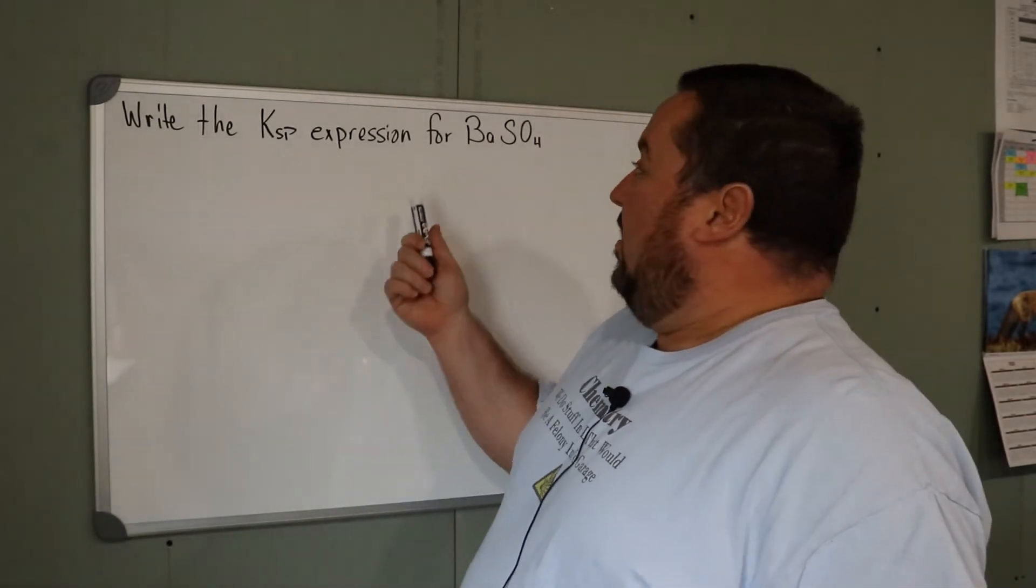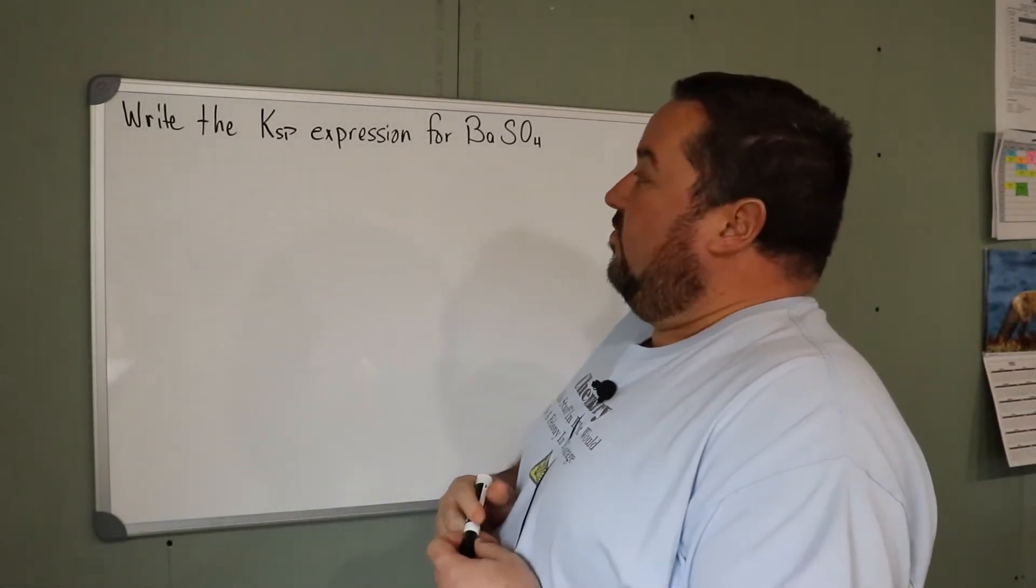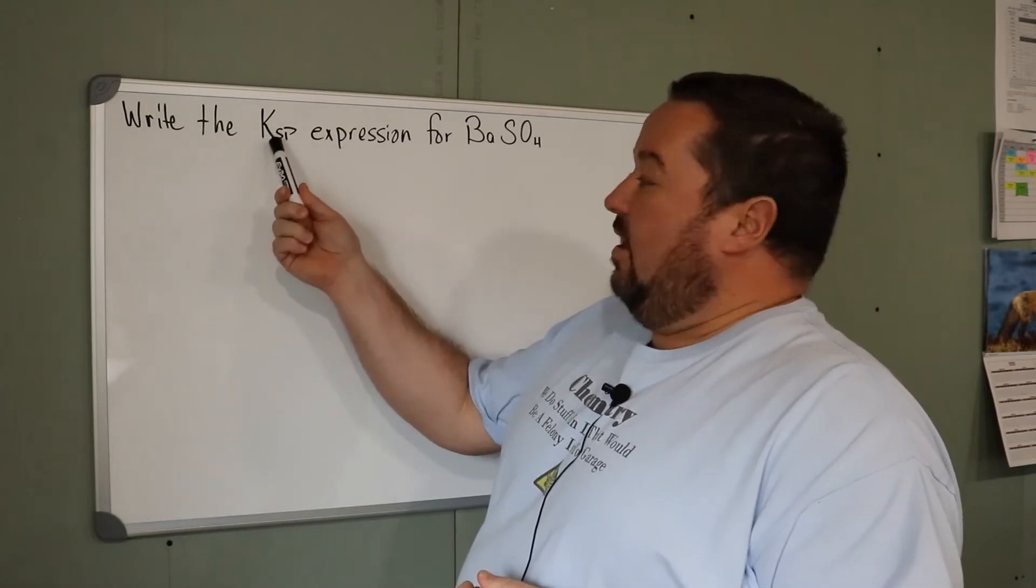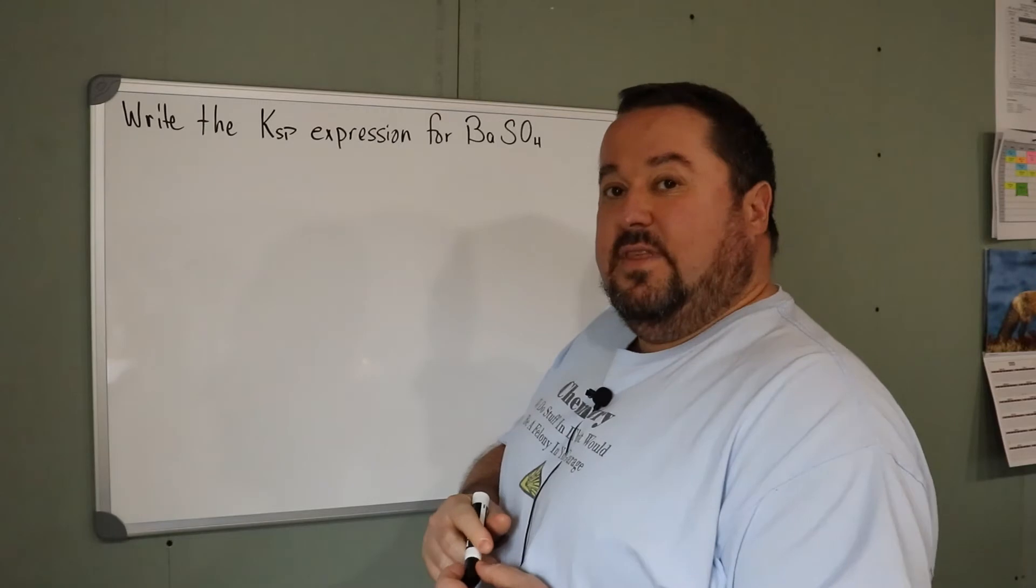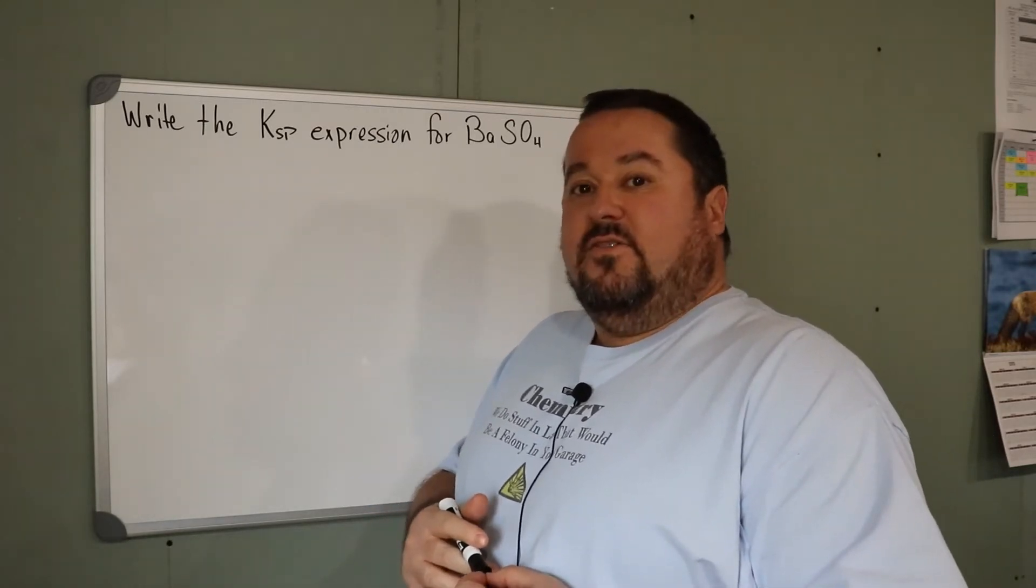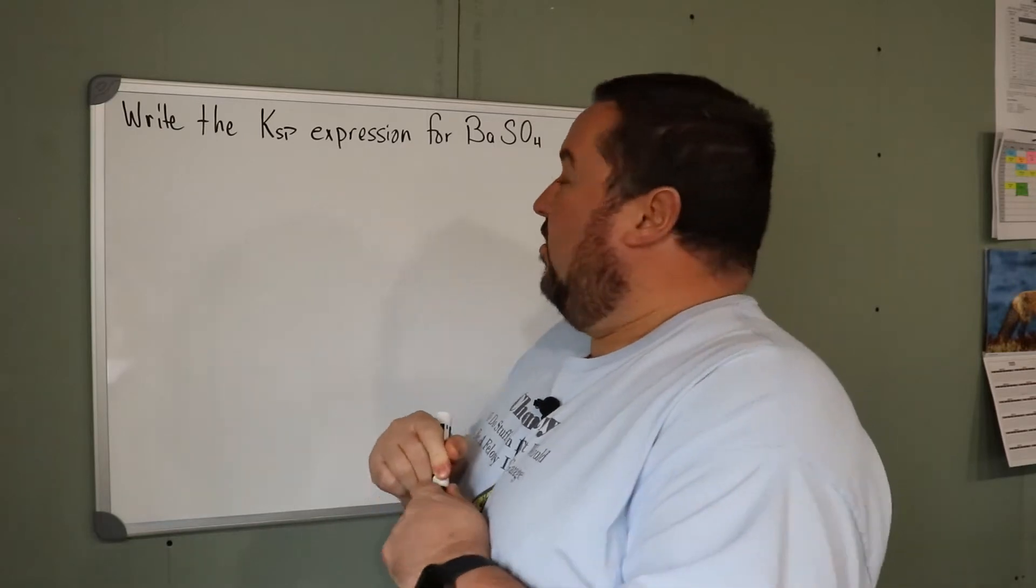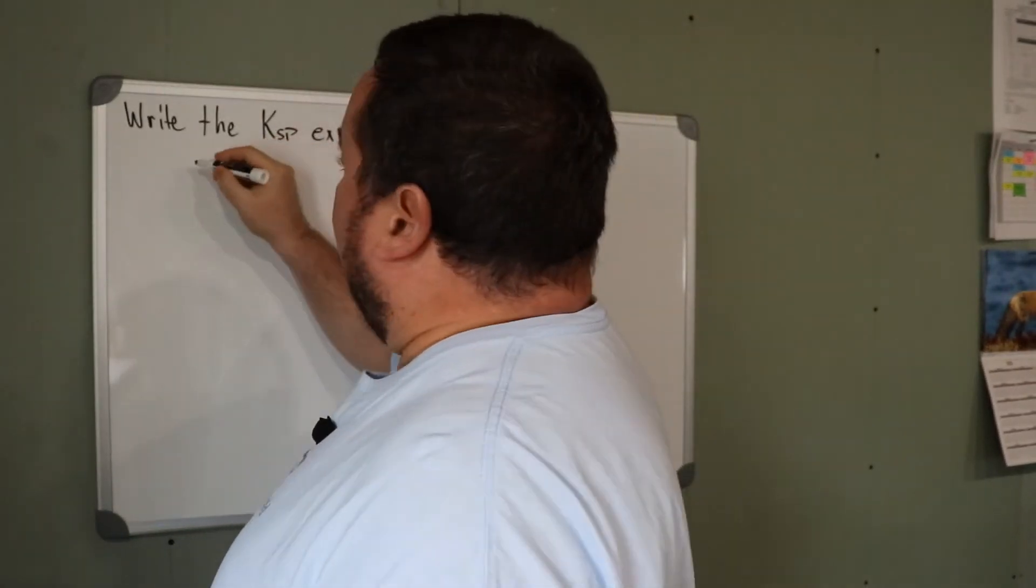We're going to write a Ksp expression for barium sulfate. This is an equilibrium constant, and SP stands for solubility product. These particular equilibrium constants represent the solubility of a sparingly soluble salt, so we need the dissolving equation.